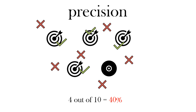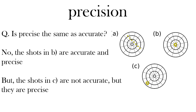Is precision the same as accurate? The answer is no. Here we've got an example of some shots on targets. In example B the shots are all in the middle, so they're accurate and precise. In example C they're not in the middle, so they're not accurate, but they are precise - they are together.